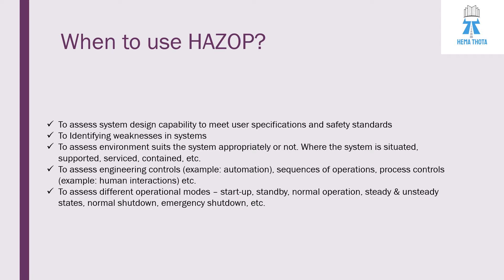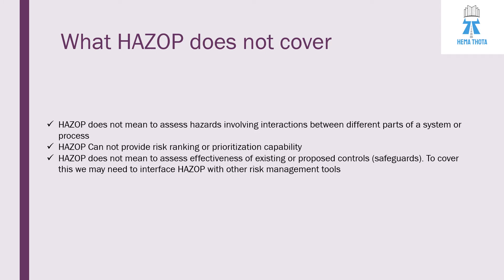HAZOP is also used to assess different operating modes like startup, standby, normal operations, steady and unsteady states, normal shutdown, and emergency shutdown. However, we cannot apply HAZOP in certain situations. HAZOP is not meant to assess hazards involving interaction between different parts of the same system or process. It cannot provide risk ranking or prioritization capability, and it is not meant to assess the effectiveness of existing or proposed controls or safeguards. To cover these gaps, we may need to interface HAZOP with other risk management tools.